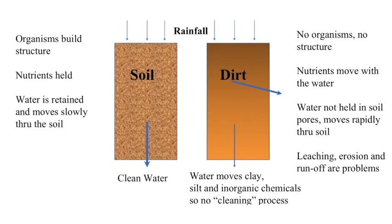Soils without microbes become compact as the sand, silt, and clay particles collapse upon each other — they are in fact dirt. Any nutrients simply wash away, particles are easily eroded, and water catchments become muddy and full of leached nutrients, beginning to turn toxic and poisoning life in the waterways and beyond. Sadly, this is the state of most of our agricultural soils in Kenya today. But now that we know about microbes, the good news is that we can fix this.